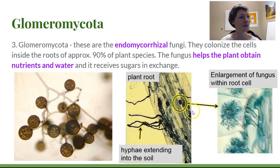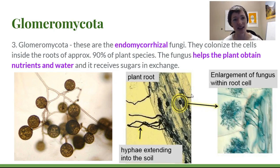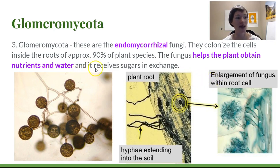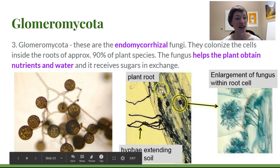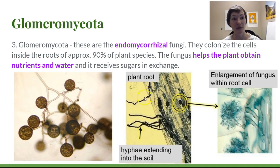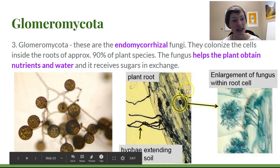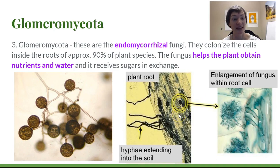So what does that mean? That means that they colonize the roots of most plants. Approximately 90% of plants form mycorrhizal relationships and most of those are this endomycorrhizal type. The fungus helps the plant obtain nutrients and water and receives sugars in exchange. Here is this fungus growing within the plant root — the fungal tissue is stained dark black-blue and the plant root is here. You can see individual plant cells as these boxes with fungal tissue growing inside of them.